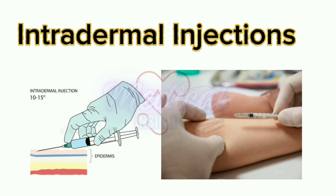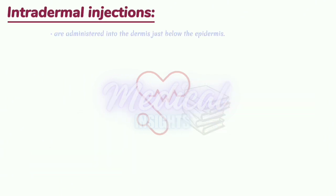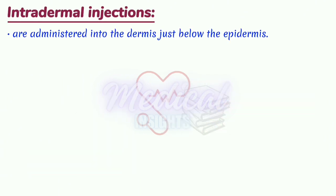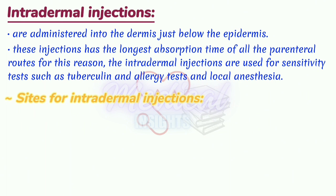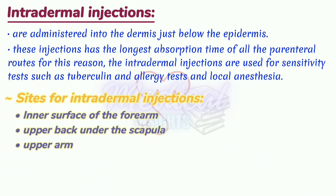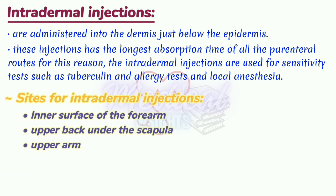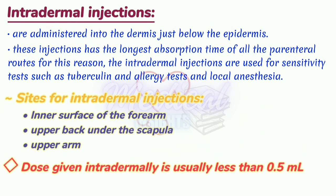Intradermal injections are administered into the dermis, just below the epidermis. The intradermal route has the longest absorption time of all parenteral routes. For this reason, intradermal injections are used for sensitivity tests such as tuberculin and allergy tests, and local anesthesia. Common sites include the inner surface of the forearm, upper back under the scapula, and upper arm. The dose given intradermally is small, usually less than 0.5 ml.